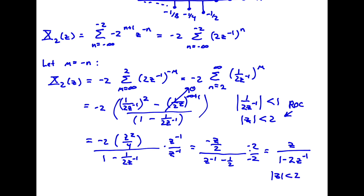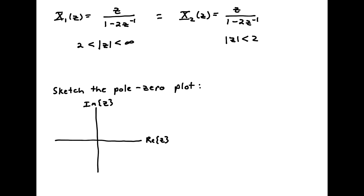Comparing the two results, x1 of z and x2 of z have the exact same algebraic expression: z over 1 minus 2z inverse. The only difference is the ROC. The ROC for x1 of z is absolute value of z greater than 2, while the ROC for x2 of z is absolute value of z less than 2. This illustrates that two different sequences can share the same algebraic Z-transform expression but have different regions of convergence.